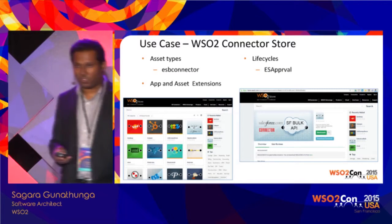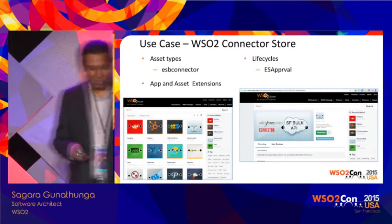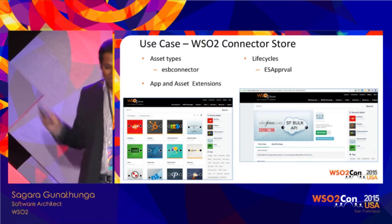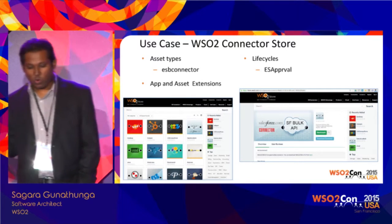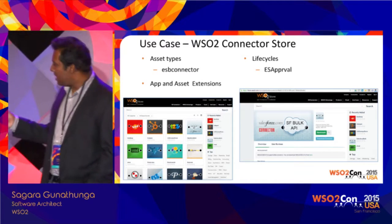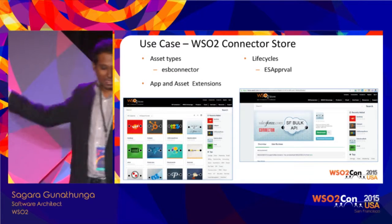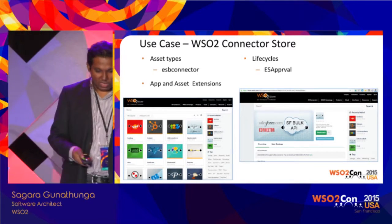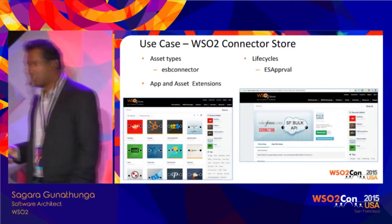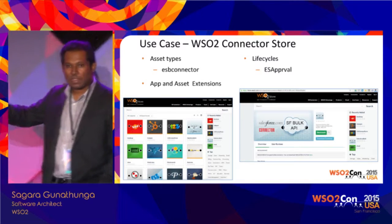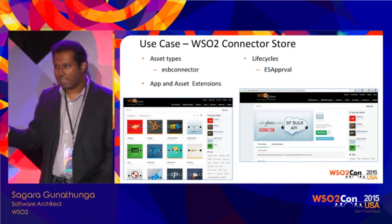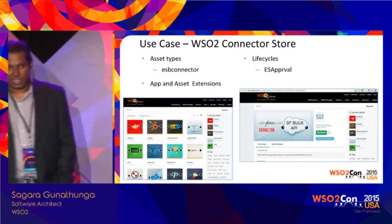The WSO2 Connector Store is used with WSO2 ESB. It uses 'ESB connector' as the asset type and has an ESB approval lifecycle. This store is more or less close to the default out-of-the-box features. The main extension here is a download link, so users can download the connector. For example, if you develop an e-book store using Enterprise Store, you can have a download link pointing to your e-book storage, or a 'Buy' button pointing to a shopping cart like Amazon.